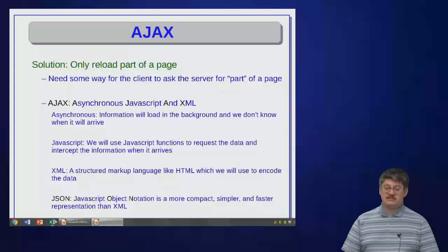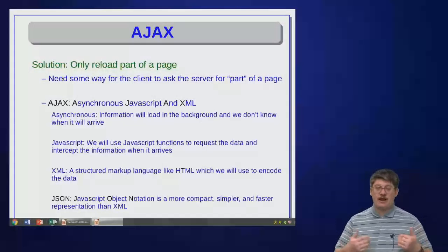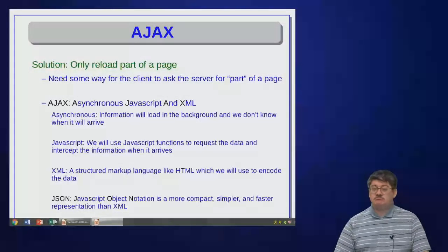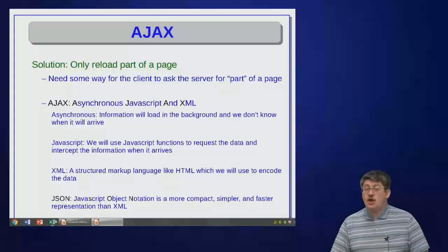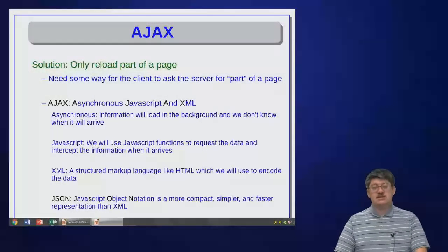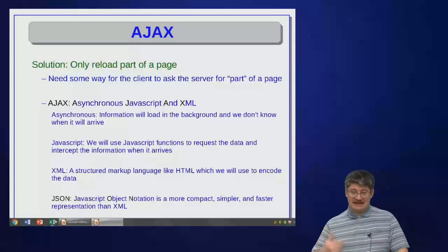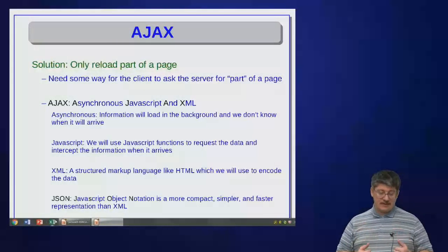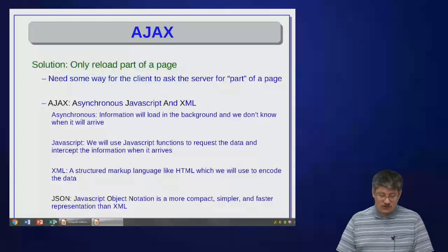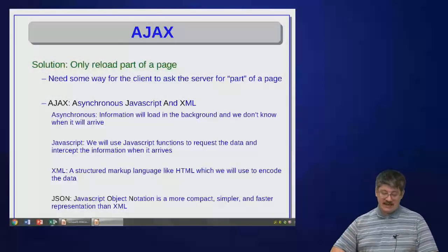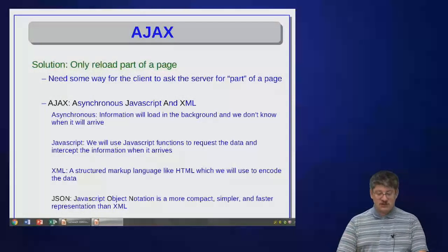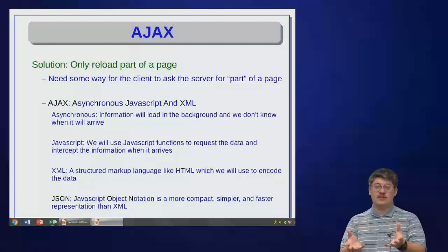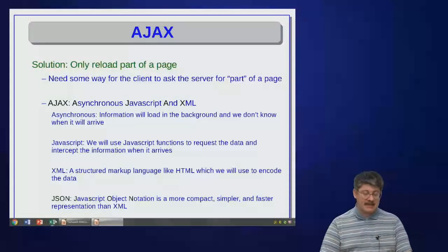It's called asynchronous because information is going to load in the background and we don't know when it will arrive. We're going to send a request to the server for that new information — it might arrive instantly, it might take minutes. That means we're going to have to use events and event handling to manage the sending and receiving of those messages. It's pretty obvious why JavaScript is in this — we're going to use JavaScript functions to request the data and intercept the information that arrives. Usually this has been used with XML.